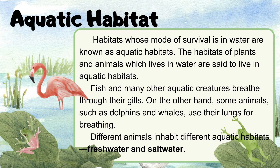The third type of animal habitat is the aquatic habitat. Habitats whose mode of survival is in water are known as aquatic habitats. Fish and many other aquatic creatures breathe through their gills. On the other hand, some animals such as dolphins and whales use their lungs for breathing. Different animals inhabit different aquatic habitats: freshwater and saltwater.